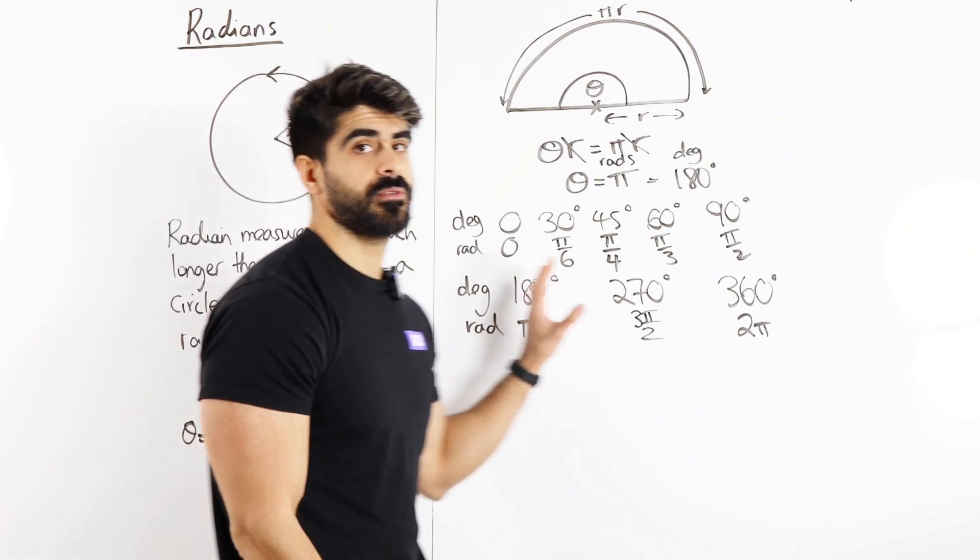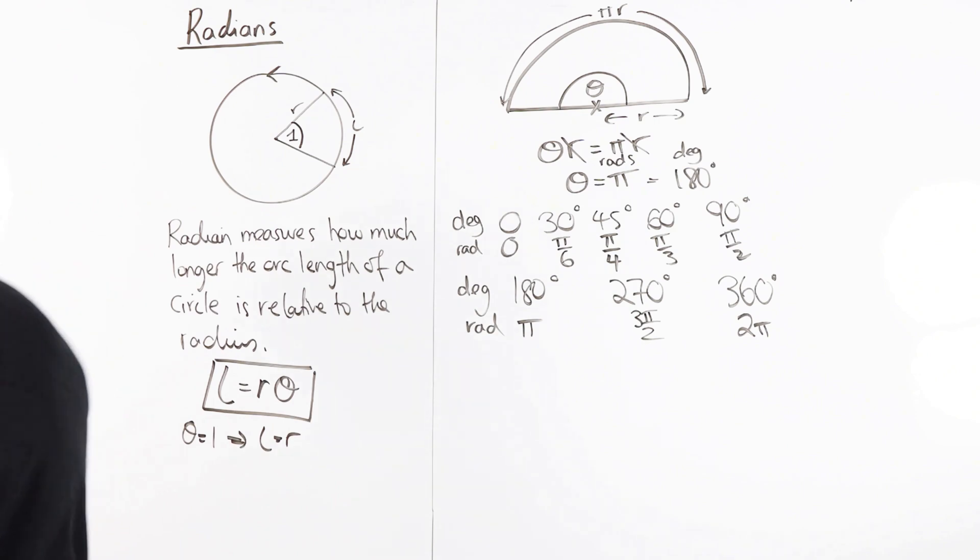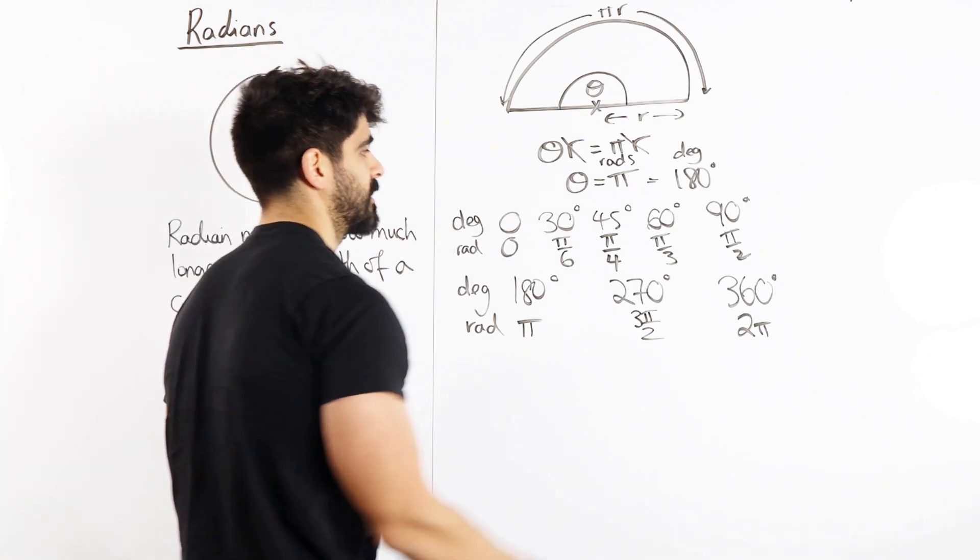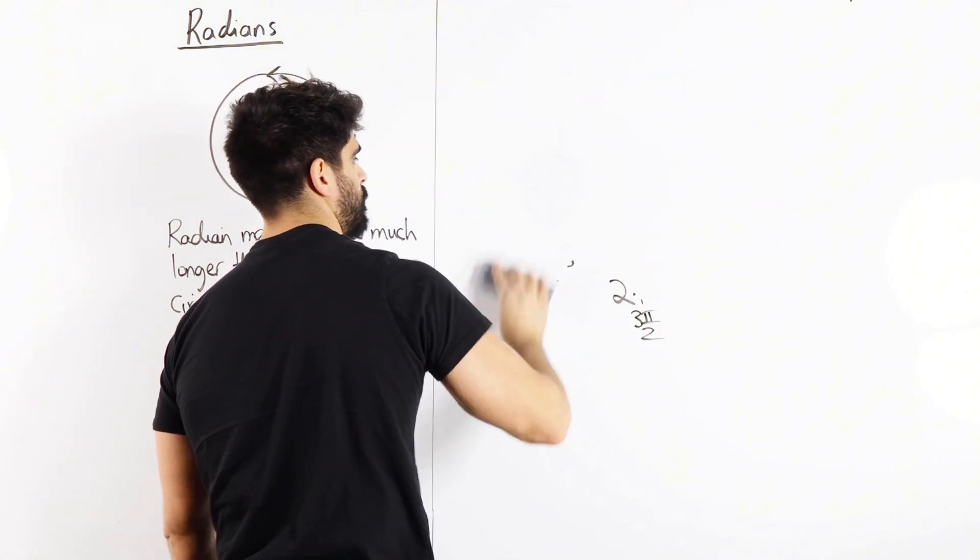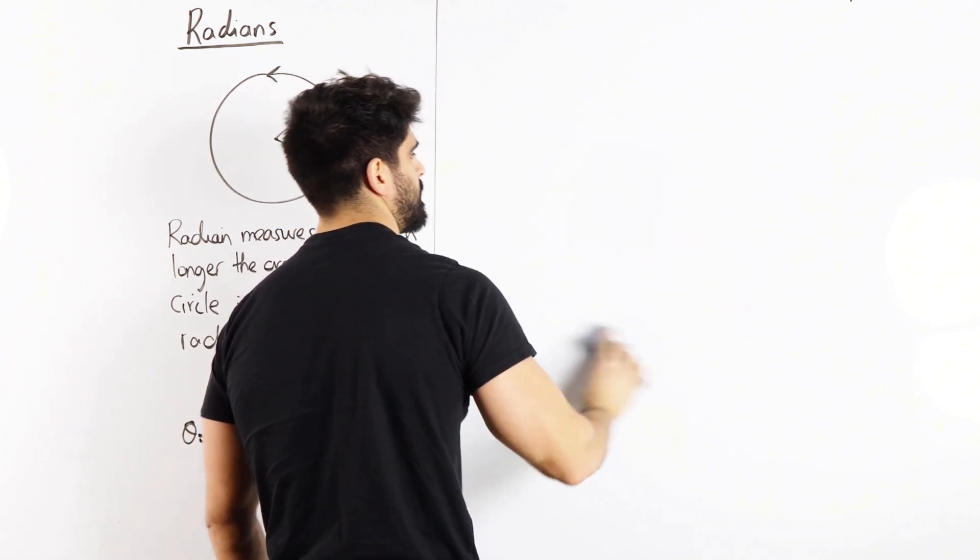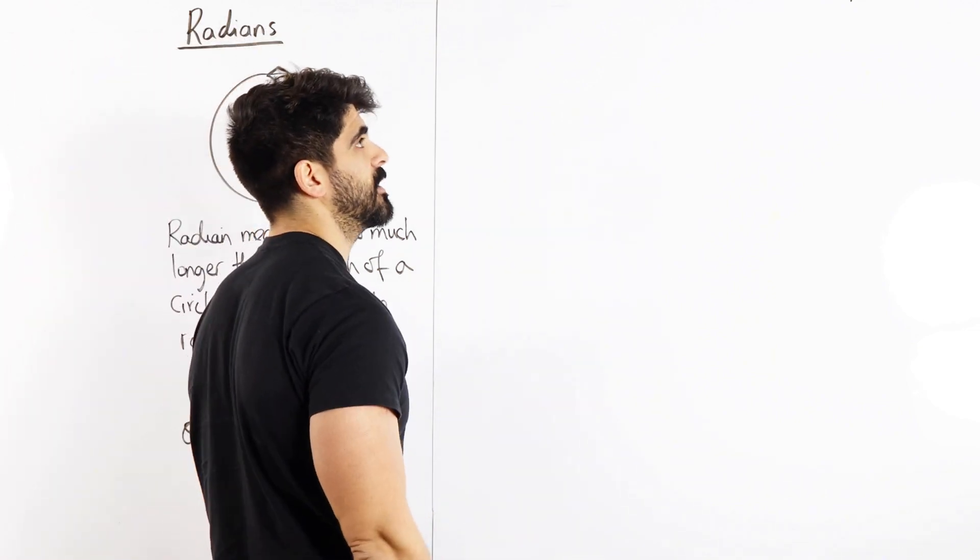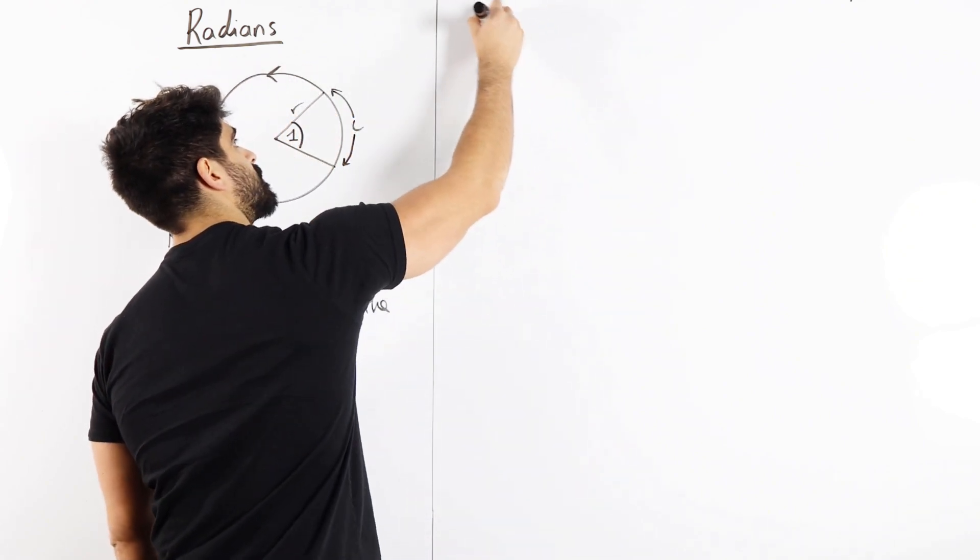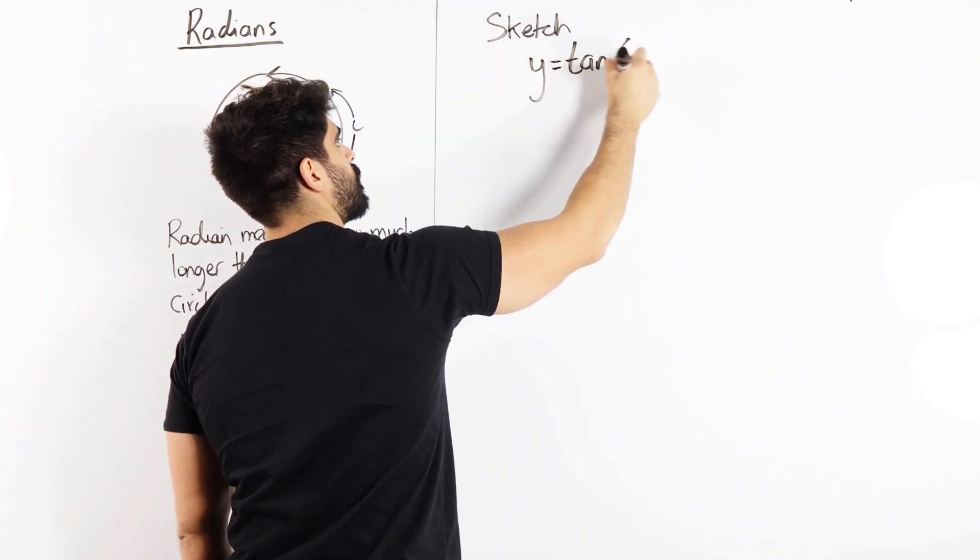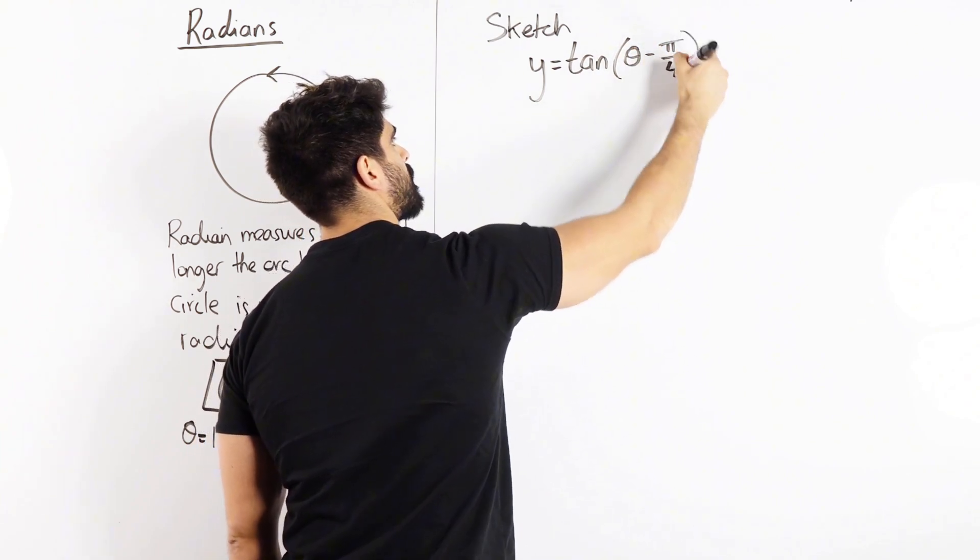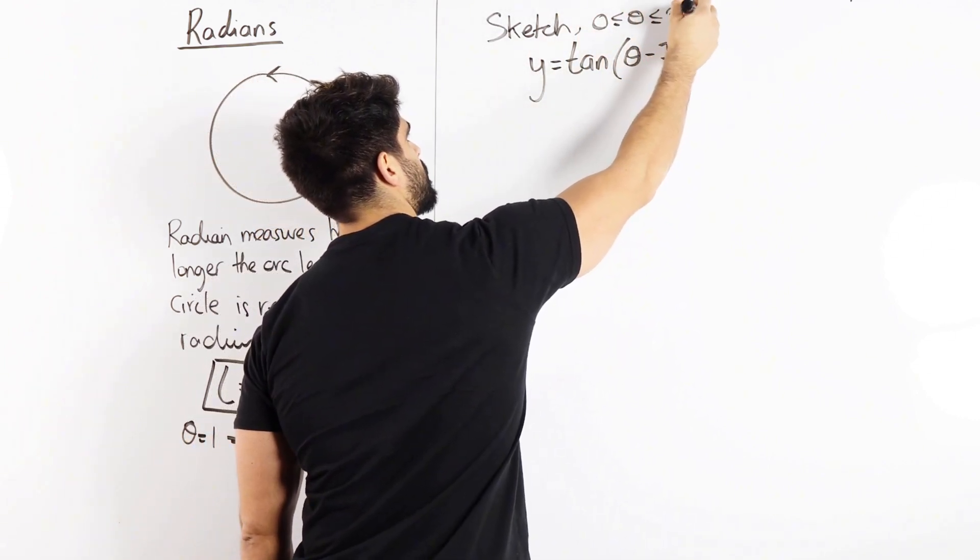So now that we know our values, let me show you guys how we can sketch trig graphs in radians. Let's just make one up. How would we sketch tan of theta minus pi over 4. So sketch y equals tan of theta minus pi over 4. And let's do it between 0, theta and 360.